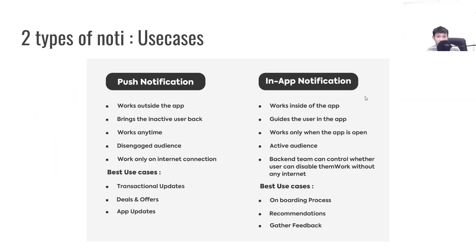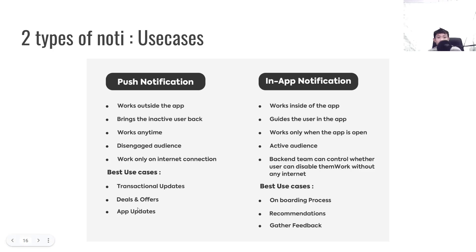Here are two use cases for the two types of notification. Push notification works outside the app and is used to increase engagement of inactive users. It typically covers transactional updates — for example, a payment confirmation — deals or offers on commercial platforms, or application update notifications. It only works with an internet connection.